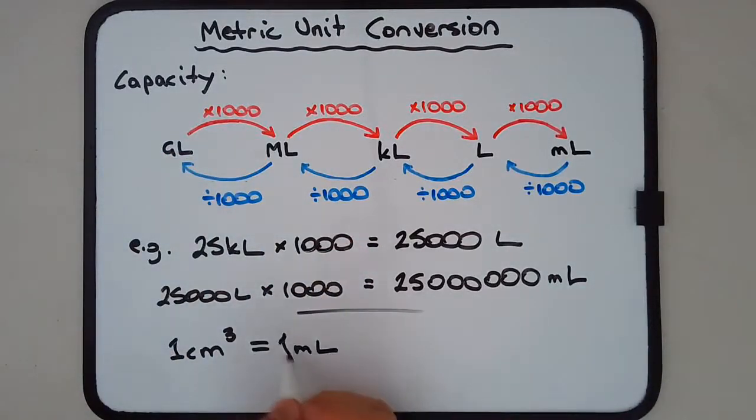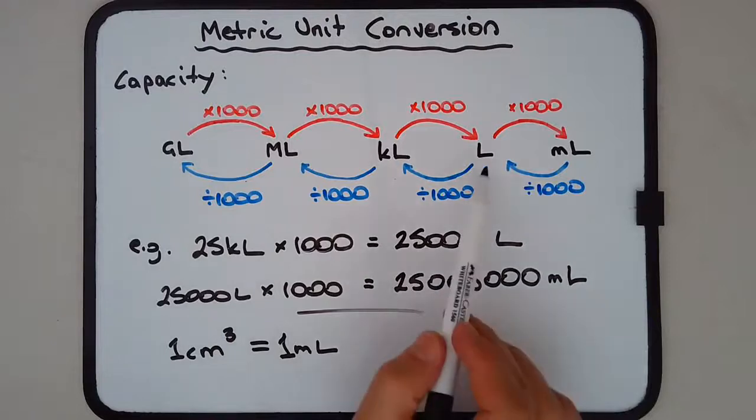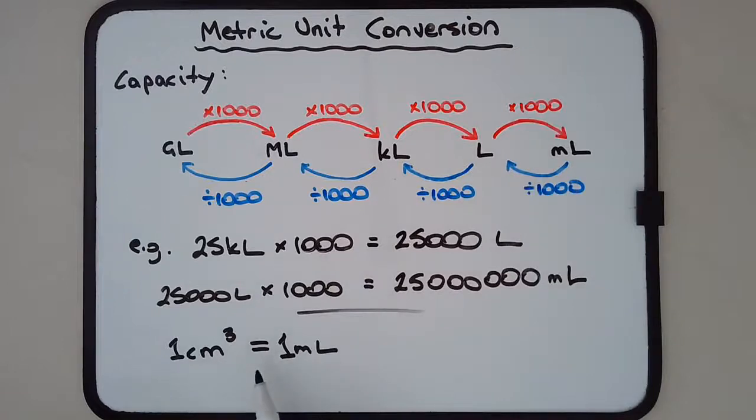That is a very useful conversion. I'll talk about that in more detail in another video when we discuss volume. For example, a bottle containing one liter of water is a thousand milliliters, which is a thousand cubic centimeters.